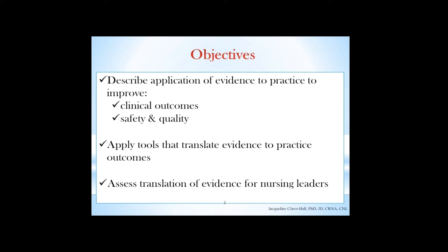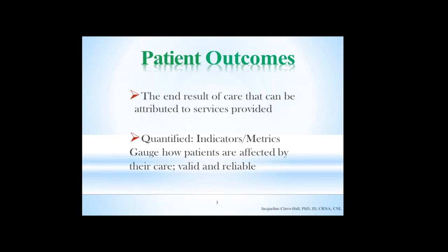We've read about some of the tools we're going to look at and how leaders will also use them. When we talk about patient outcomes, we're talking about the end result of care and how it can be attributed to the services provided — the connection between services and end results for patients. When we quantify them, we look at nursing indicators and metrics. These metrics and indicators usually have to be valid and reliable.